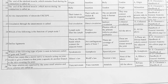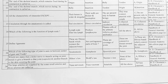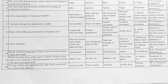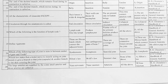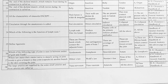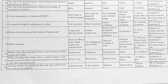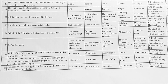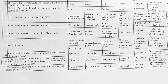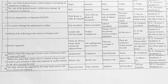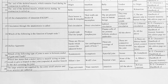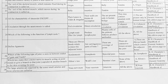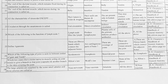Next, which of the following type of joint is seen in between the socket of gum and tooth? Options: A. syndesmosis, B. gomphosis, C. synovial joint, D. suture. Option B is correct, gomphosis.